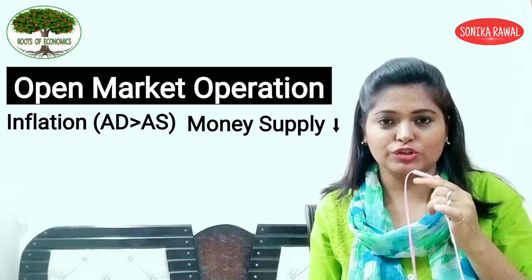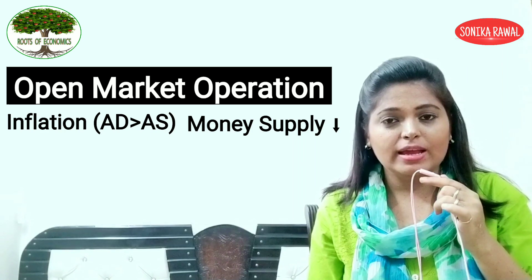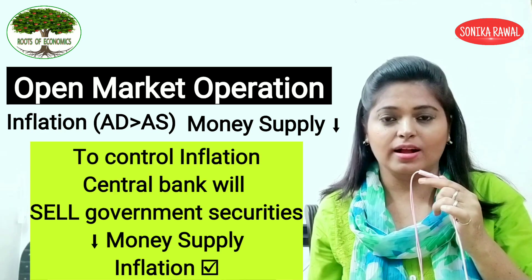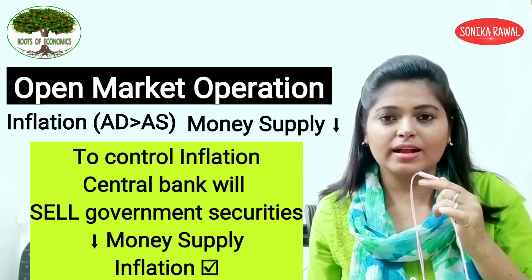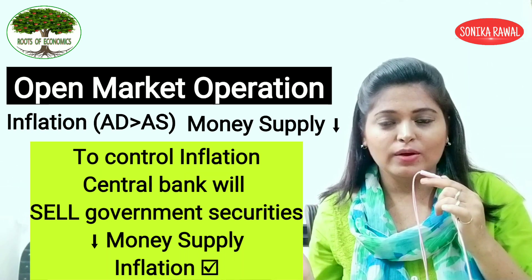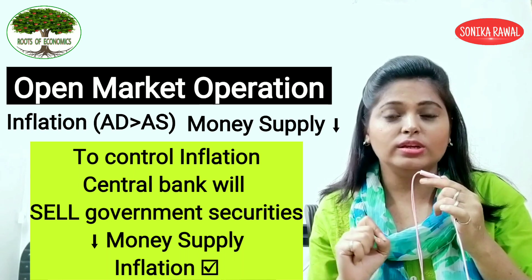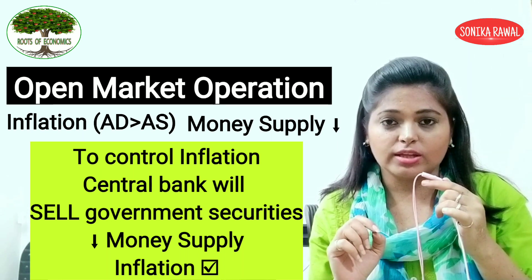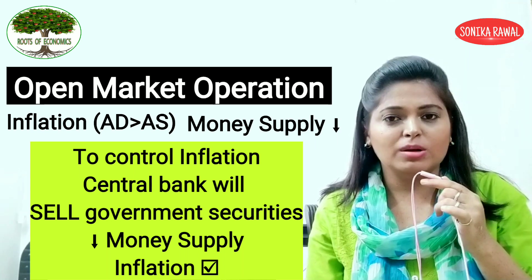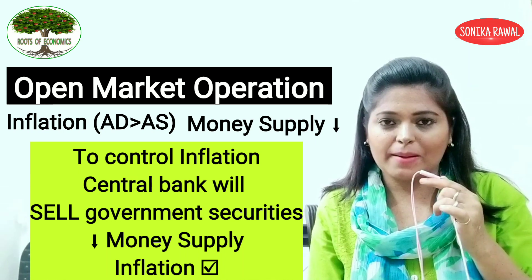Open Market Operations involves simply the buying and selling of government securities by the central bank. What will the central bank do in this situation? The central bank will sell government securities. When the central bank sells, the commercial banks buy those government securities and pay money to the central bank. As a result, the central bank wants to squeeze liquidity from the economy. When commercial banks pay for the securities, they have less money, reducing the money supply in the economy.